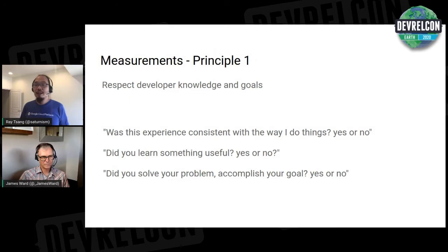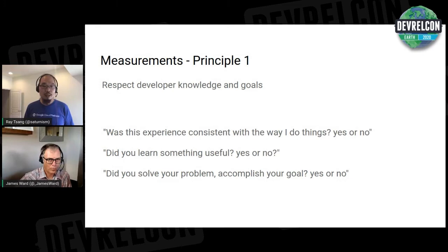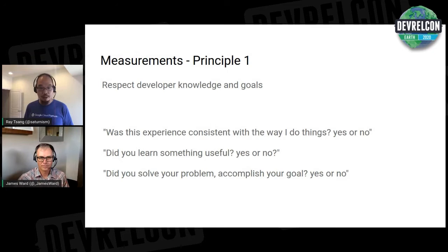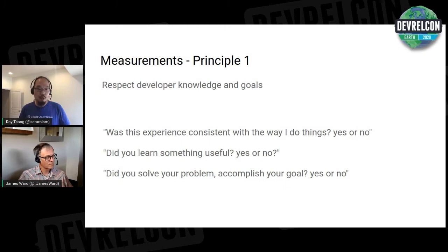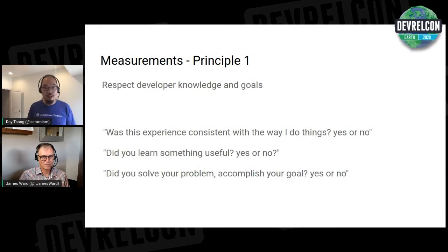There are measurable ways to assess this principle. We need to ask users questions: did this experience achieve your goal — yes or no? Was the experience consistent with the way you've been doing things? Did you learn something useful? That's probably one of the valuable goals developers want to achieve. The best way to get these answers is to ask them straightforwardly and have users respond, so you can understand whether they're actually achieving their goals successfully.